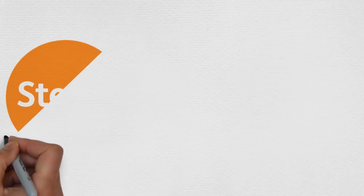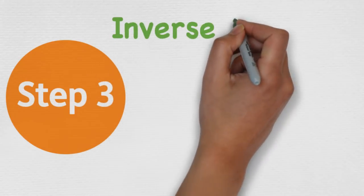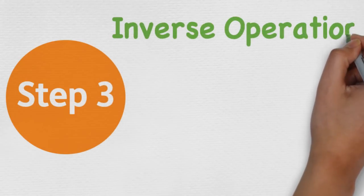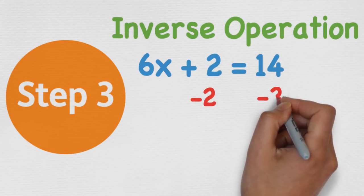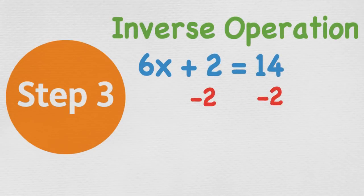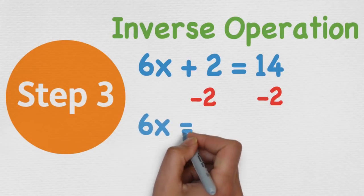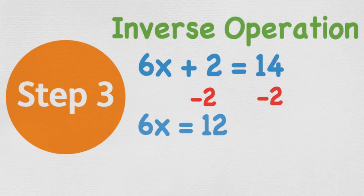Don't worry, we still have one more step left to solve this equation. So step three is inverse operations or opposite operations. As you can see, we have minus 2 from the left side of the equation. This is because the inverse operation of positive 2 or plus 2 is take 2. And whatever happens to the left side, you must, I repeat, must do to the right side. So this leaves you with 6x = 12.